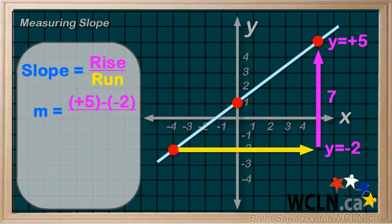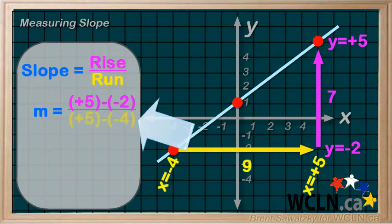For the run, we could also count blocks. Going from negative 4 to plus 5, for a total of 9. Or again, worth noting, we could take our second point's x value, plus 5. And subtract our first point's x value, negative 4. And again, brackets to keep track.